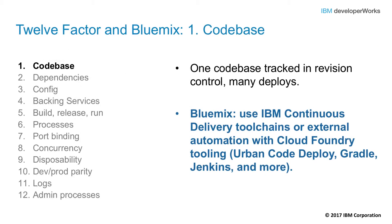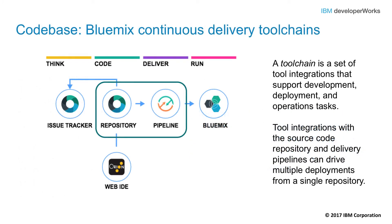Factor number one: codebase. The idea here is to have one codebase tracked in revision control with multiple deployments. When looking at Bluemix Cloud Foundry applications, the application is the unit of deployment. Continuous delivery tool chains, also known as Bluemix DevOps, provides capabilities for you to easily implement this factor. A tool chain is a set of tool integrations that support development, deployment, and operational tasks. Tool integrations using a source code repository and delivery pipeline can drive multiple deployments from a single repository.